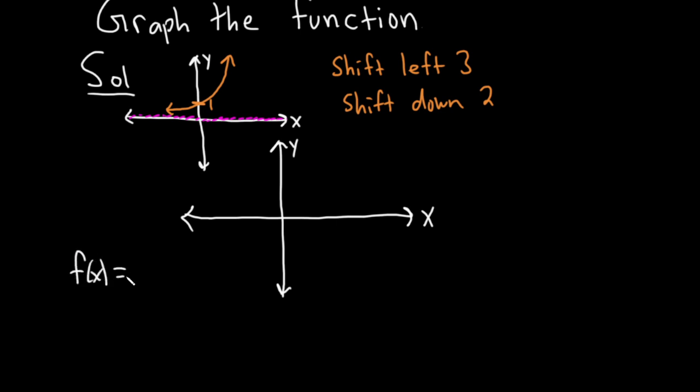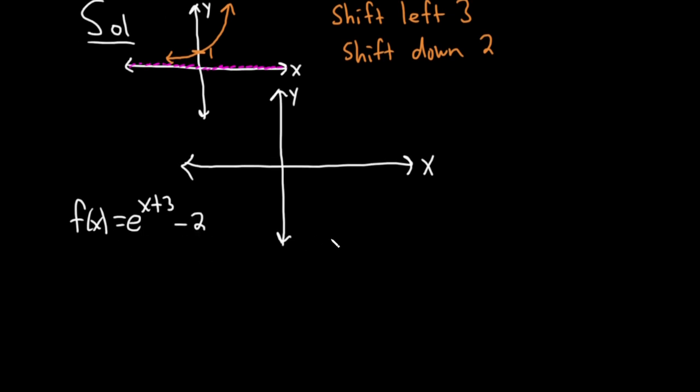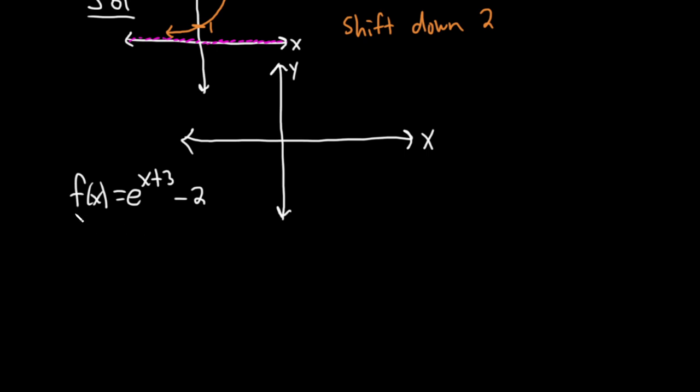Let's do that really quick before we graph it, just to get a better graph. So f(x) = e^(x+3) - 2. First, let's find the y-intercept. To find any intercept, you set the other one equal to 0. So to find the y-intercept, we set x = 0. This is e^(0+3) minus 2.